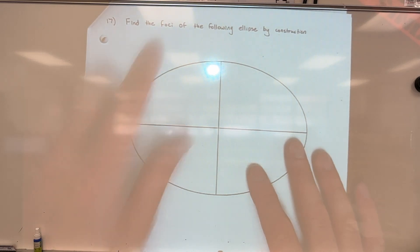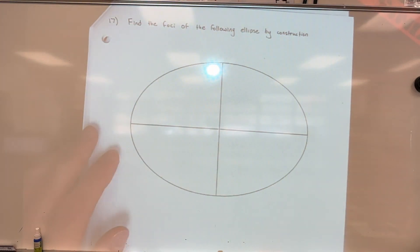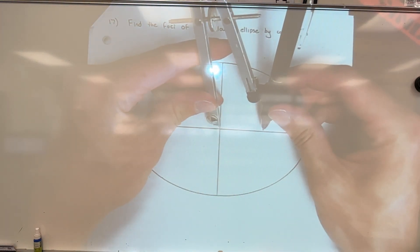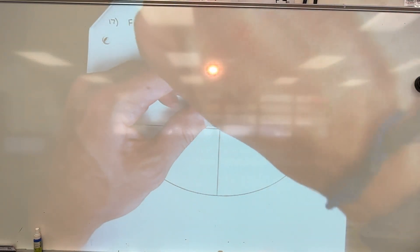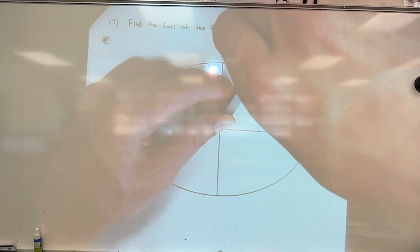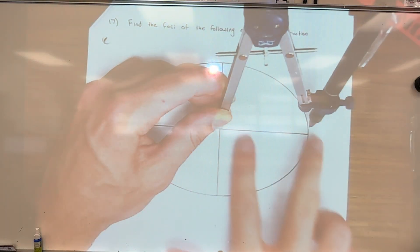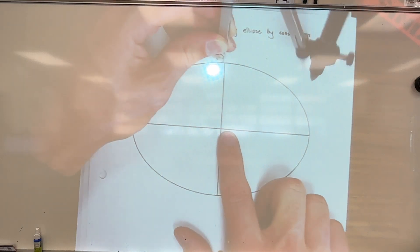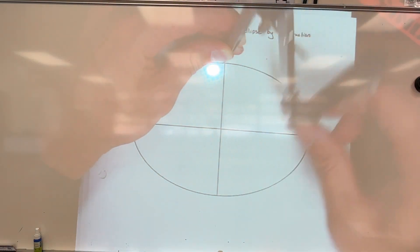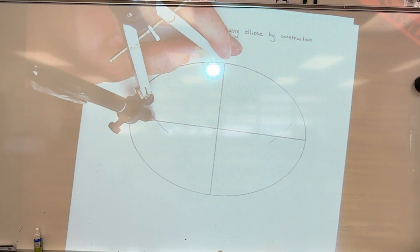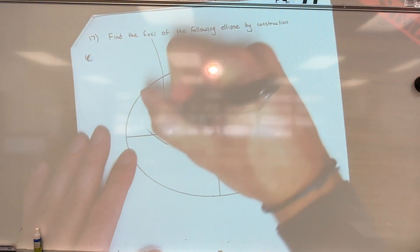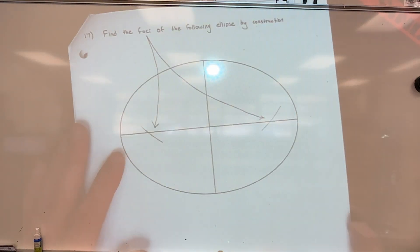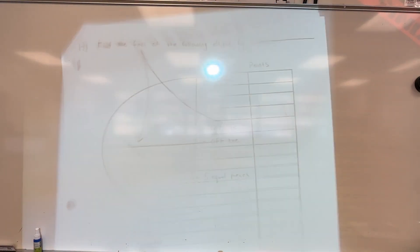Number seventeen: finding the foci of an ellipse. Measure from the center to the end of the major axis — the longest radius. Then move the metal tip up to the end of the minor axis and draw an arc that intersects the major axis twice — once on each side. Those two intersection points are the foci of the ellipse.